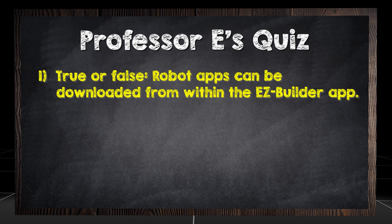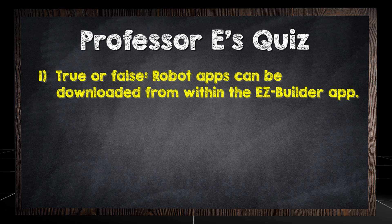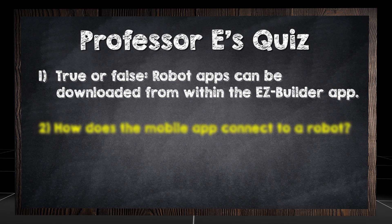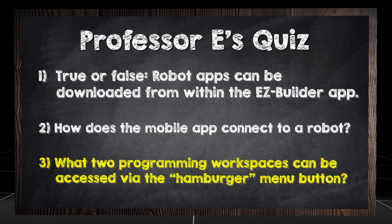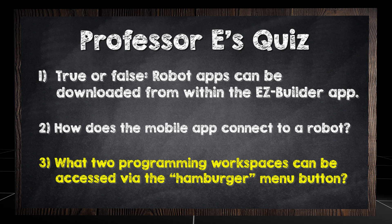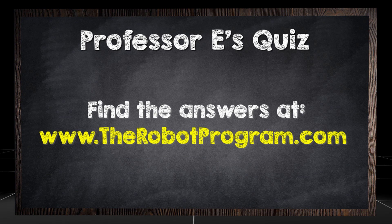True or false: robot apps can be downloaded from within the EasyBuilder app. How does the mobile app connect to a robot? What two programming workspaces can be accessed via the hamburger menu button? Find the answers at therobotprogram.com.